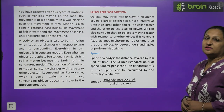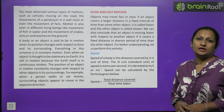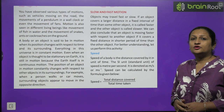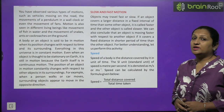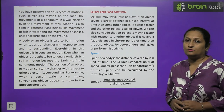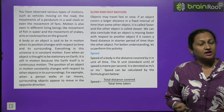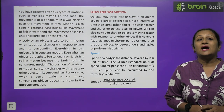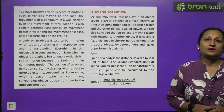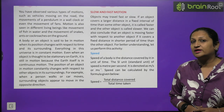Everything in this universe is in constant motion. Every object in the universe is moving — be it planets, be it the Earth, or any individual. Because if life stops, that means death occurs. So everything is in motion. Even if we are stationary, we are still in motion, because the Earth is constantly moving — it rotates around its own axis and also revolves around the Sun. So even if we are stationary, we are moving along with the Earth.